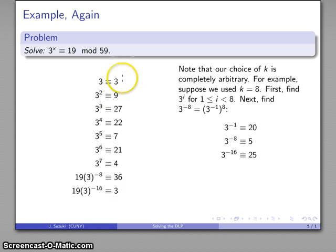So, again, if I just focus on the ones that are the same, I have 3 congruent to 19 times 3 to power 16, and multiplying both sides by 3 to power 16 gives me my solution once again. So, it doesn't really make a difference what we choose as k.